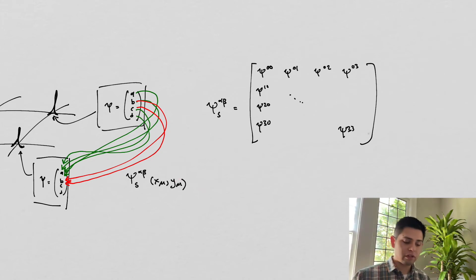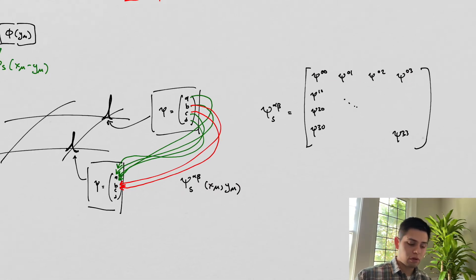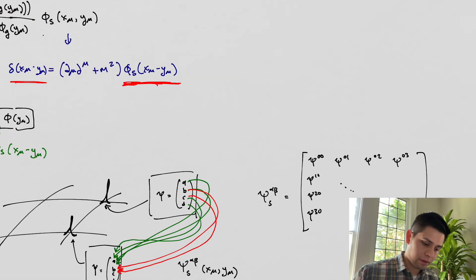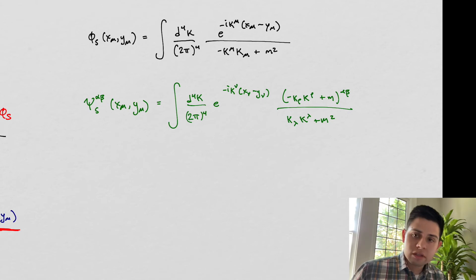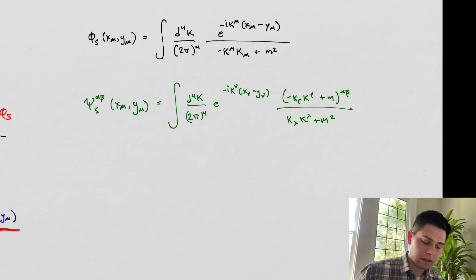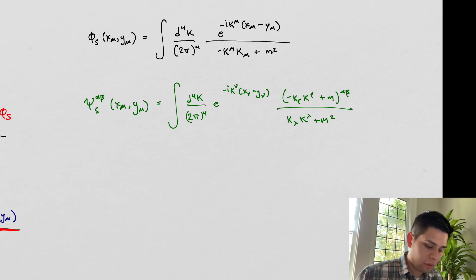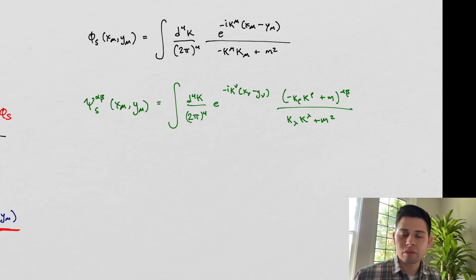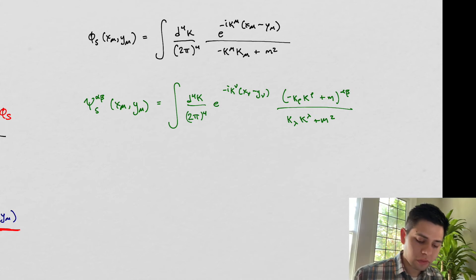Spoiler alert: these are going to be Green's functions for all three cases — Klein-Gordon, Dirac, and Proca — and these Green's functions are going to be very important in helping us understand exactly what these interactions are like. Here's a teaser: the Green's function for the Klein-Gordon case and for the spinor case. There's a pattern emerging: we have this exponential e factor in the numerator, and something in the denominator. The only difference between the Dirac and spinor case is one additional term, and for the Proca case there's a slight modification where the metric also shows up.